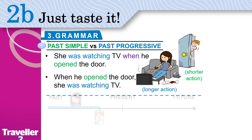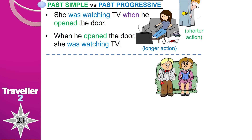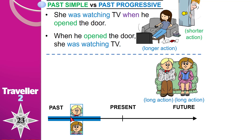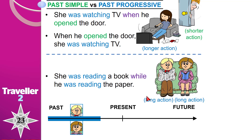Look at the second example: he is reading the newspaper, she is reading a book — both happened in the past. He started and kept going, and she was reading her book at the same time. Both actions were happening simultaneously; no action interrupted the other. This is why we give past progressive to both. We say: 'She was reading a book while he was reading the paper.'